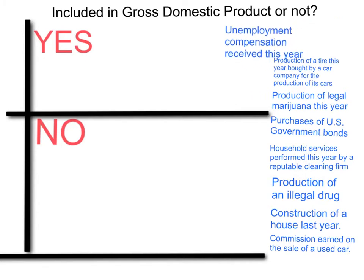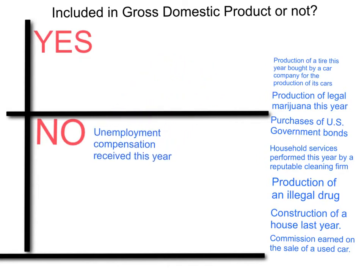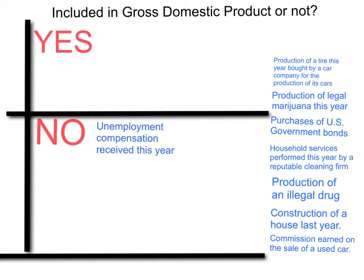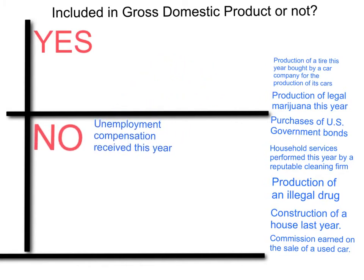The first one: unemployment compensation received this year. Unemployment compensation and welfare payments, Social Security — these are not included in GDP. These are purely financial transactions; they do not directly represent production, so that's not included.